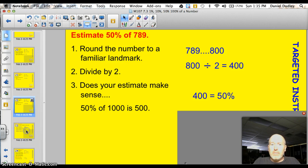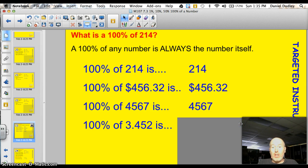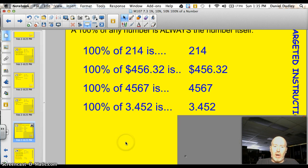You know, the last one is probably the easiest of all, and that's finding 100%. 100% of any number is always the number itself. Take a look. 100% of 214 is 214. 100% of $456.32 is $456.32. You try it. What's 100% of 4,567? I bet you you said 4,567. How about a decimal? How about 100% of 3.452? It's the number itself.